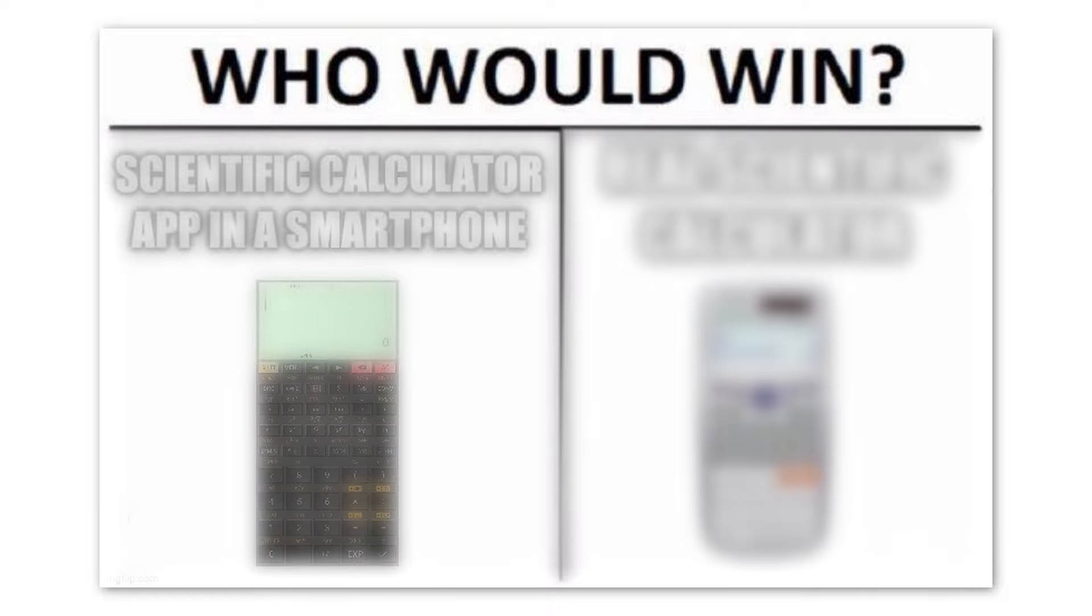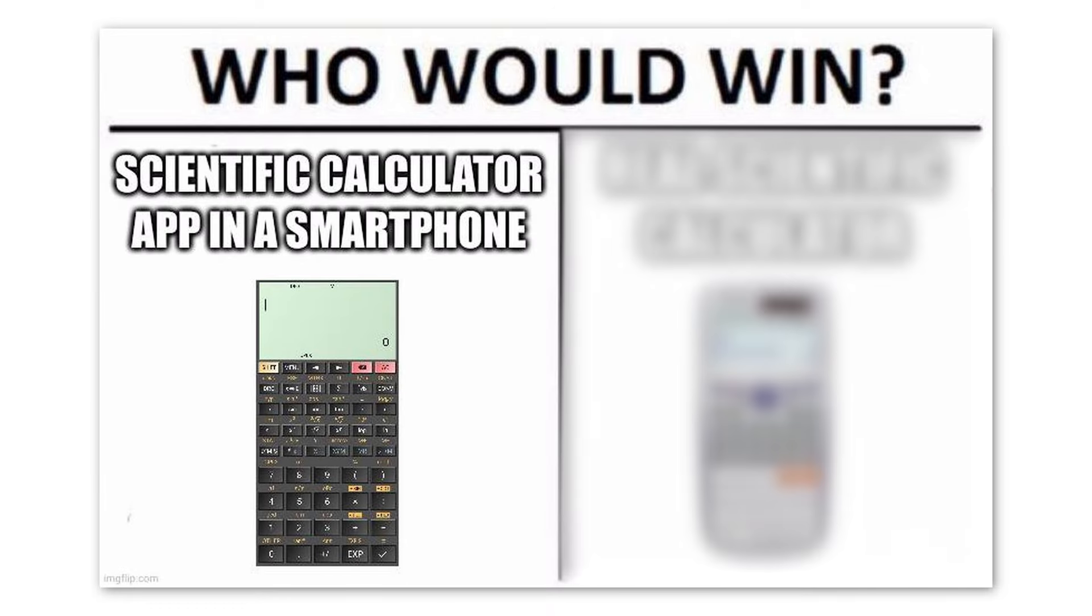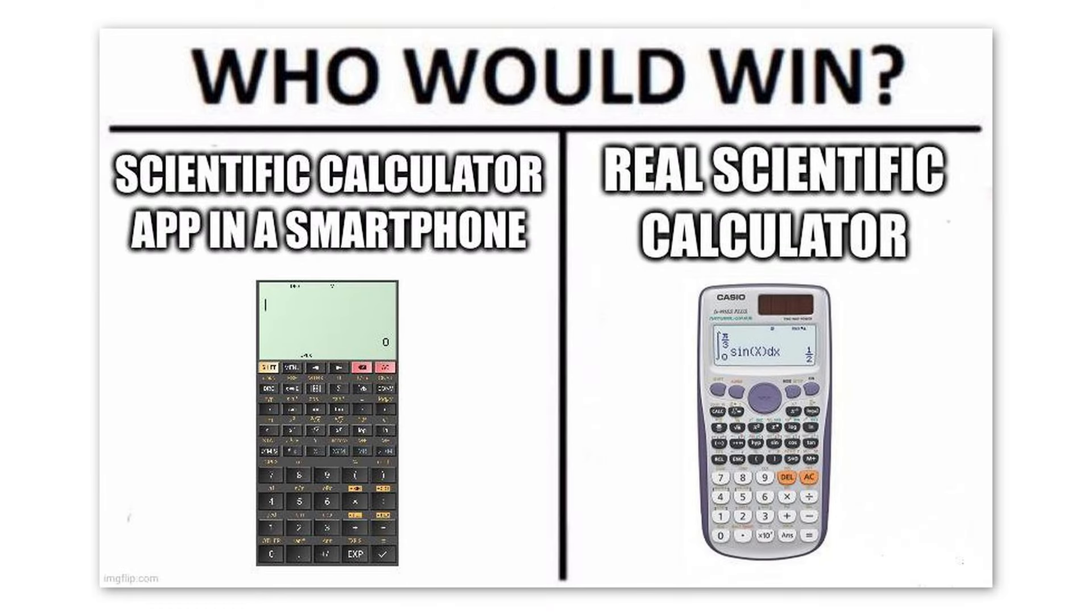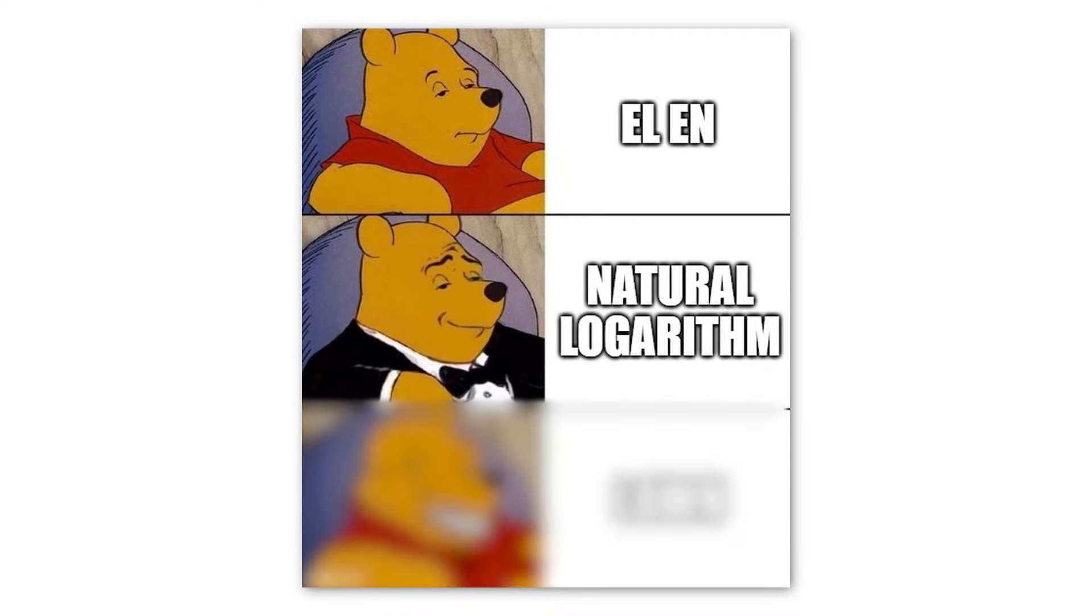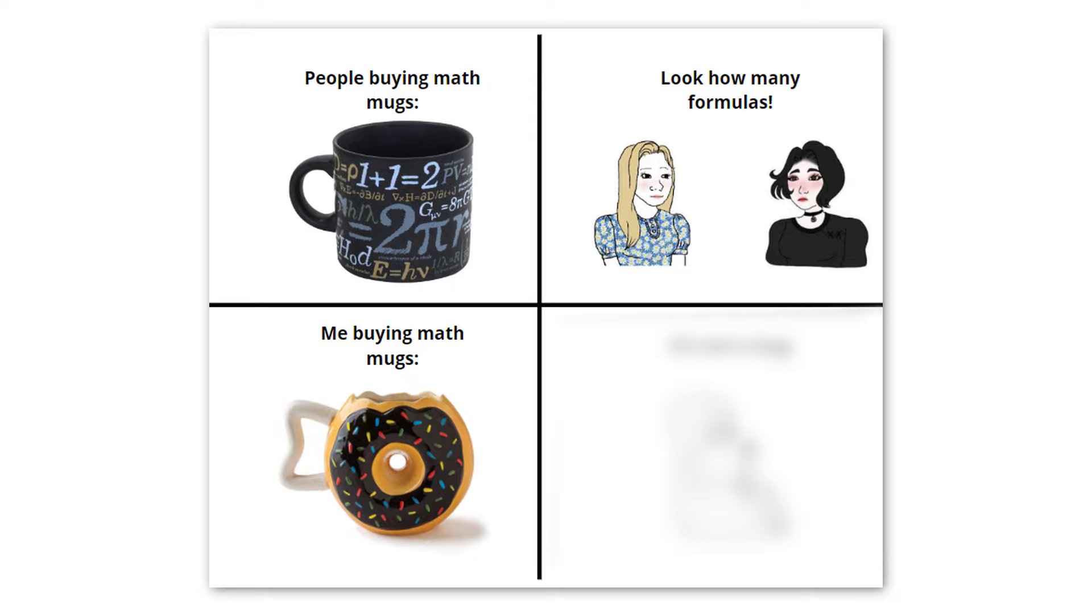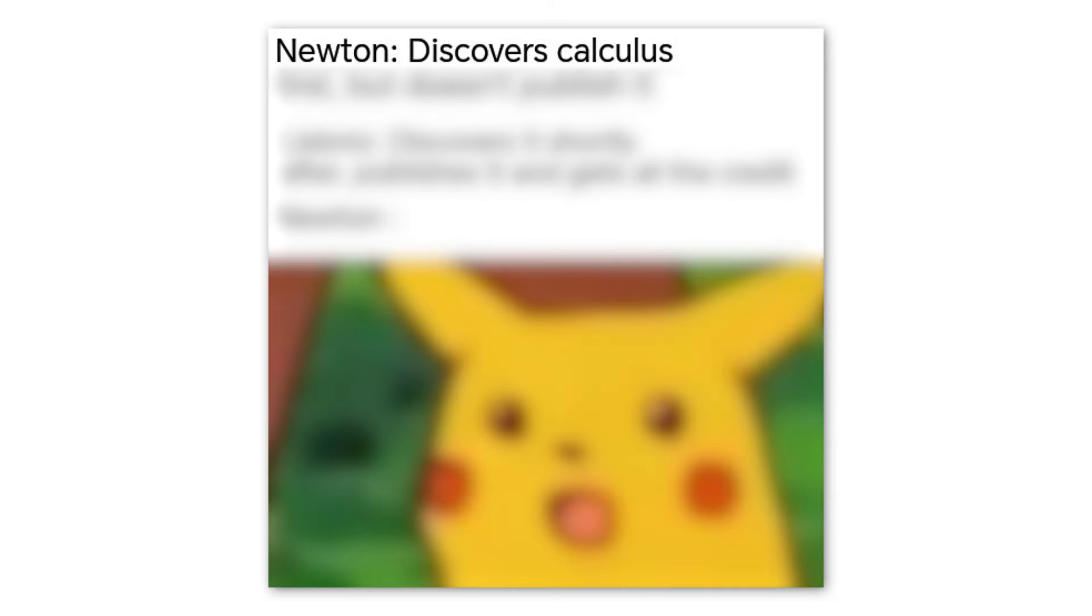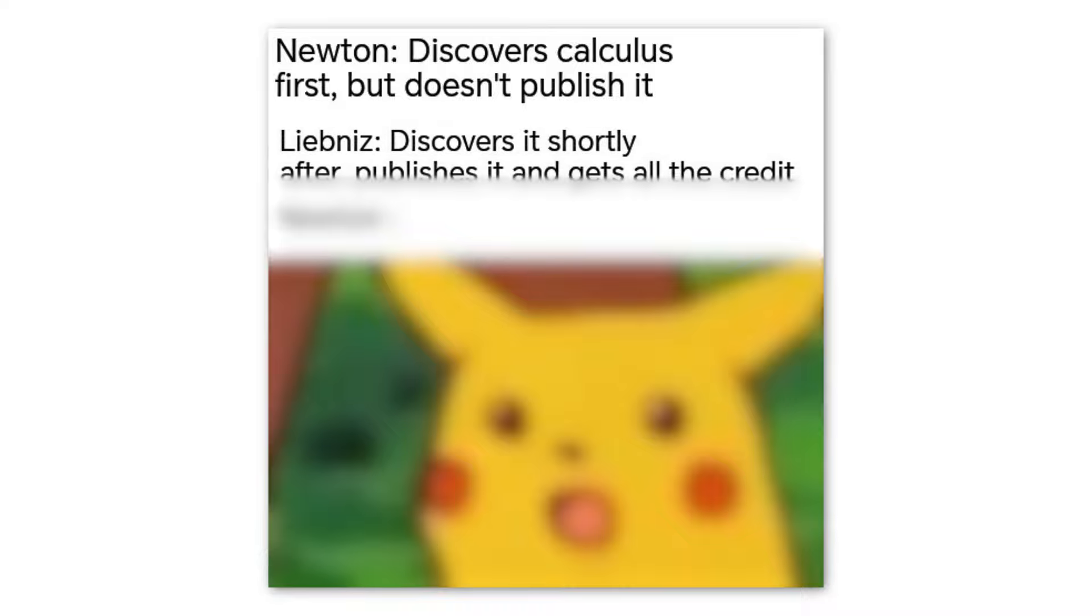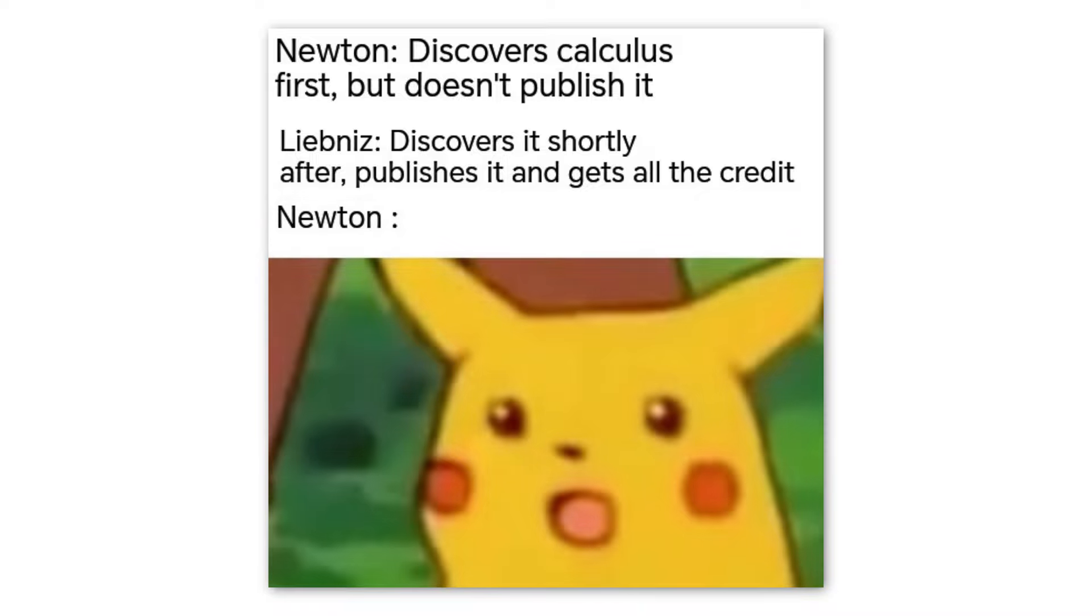Who would win? Scientific calculator app in a smartphone. Real scientific calculator. L'N. Natural logarithm. Lawn. People buying math mugs. Look how many formulas. Me buying math mugs. It is not a mug. Newton. Discovers calculus first, but does not publish it. Leibniz. Discovers it shortly after. Publishes it and gets all the credit. Newton.